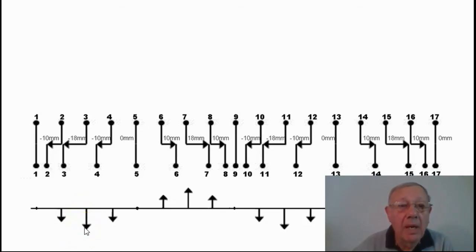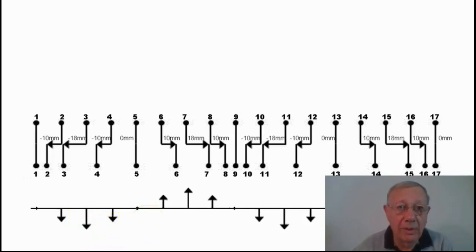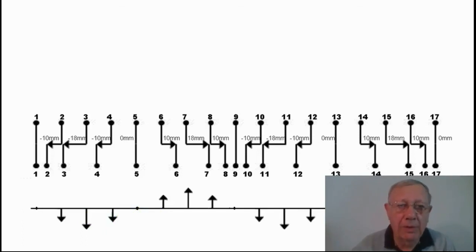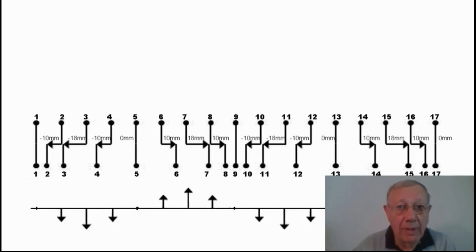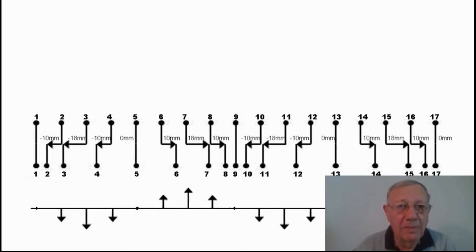So these are the characteristics of all waves: all waves have frequency — the number of waves per second, measured in hertz — they have a wavelength, they have a period, and they have an amplitude.